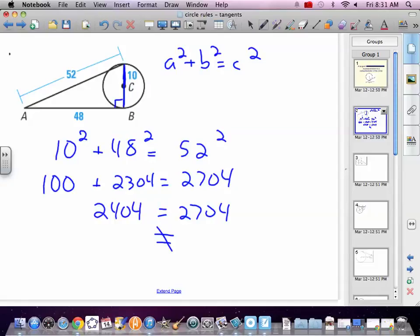2404 is not equal. So, therefore, that would not be tangent if we have 10 as a diameter, 48 as b, and 52 as c. Because Pythagorean theorem is not working.